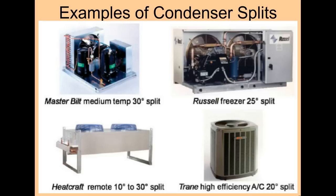Here are some examples: a Master Built medium temp is at 30 degrees, a Russell freezer at 25, a Trane AC system at 20 degrees split, and a remote system is 10 to 30 — not super precise, but it does give you a reference point.